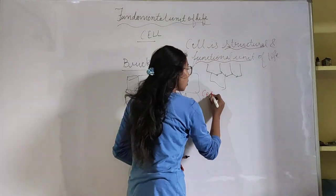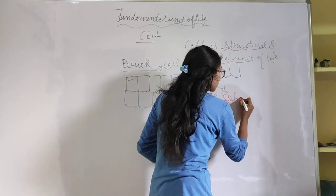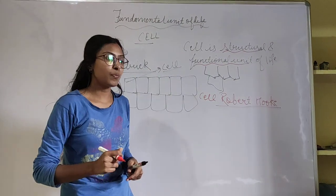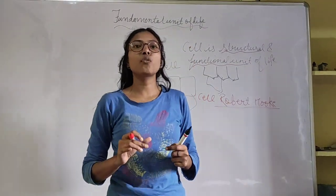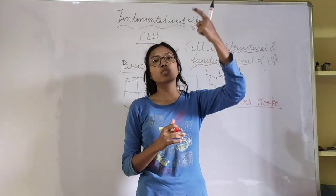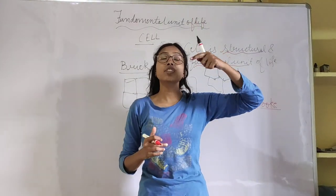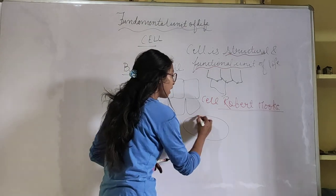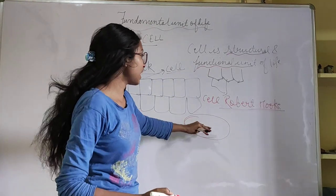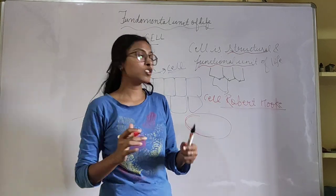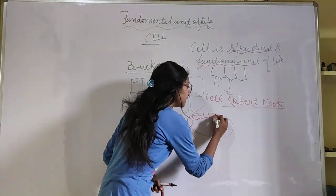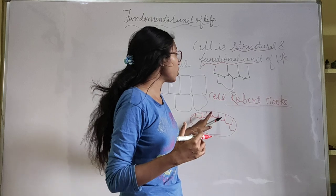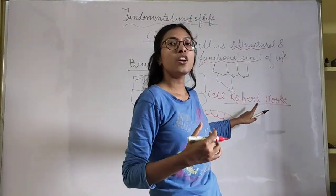Cell was discovered by Robert Hooke. He experimented on cork cells. When a tree grows very old, the stem and roots become rigid and dead. When it was cut and seen under the microscope, really small cells were seen, and from there the idea came that our body is also made up of these small cells.